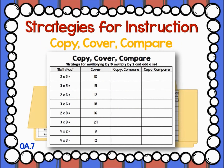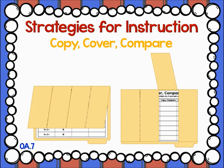Once a strategy has been taught, make sure students have ample opportunities to practice. Copy, Cover, Compare is a great activity for fluency practice. Here, the teacher just finished teaching the strategy for multiplying by 3 — students are encouraged to double the amount and add one more set. Since this strategy relates to the 2's facts and 3's facts, the teacher included both fact families on the Copy, Cover, Compare sheet. The teacher puts the sheet in a file folder with four flaps. Students look at the fact under the first flap, copy it under the third flap, and solve it. Students then check their work, and if it's incorrect, there is a fourth flap for them to lift and practice again.